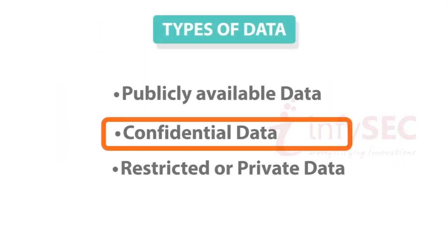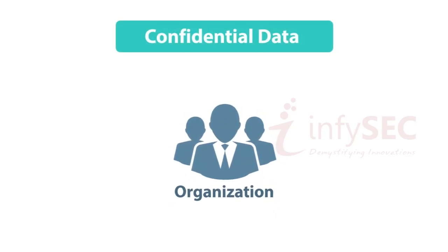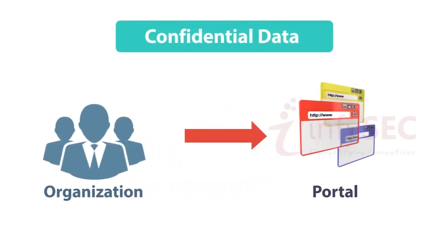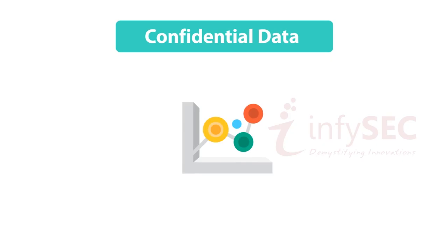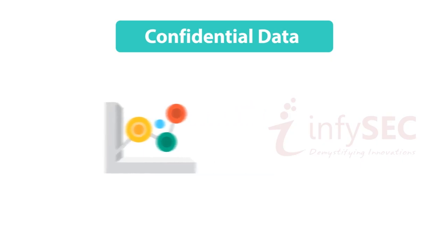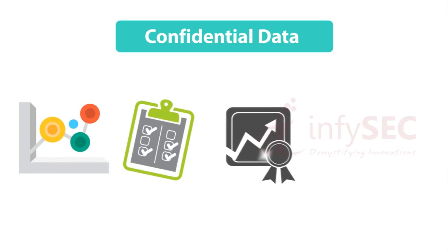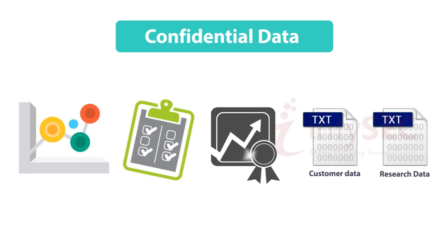When data is available only to the people involved in a process or an organisation — in other words, it is restricted from unauthorised access — it is called confidential data. Examples include a manufacturing company's market forecast data, test cases and standards, a bank's customer data consisting of addresses and phone numbers, or a government's sensitive scientific and medical research data.